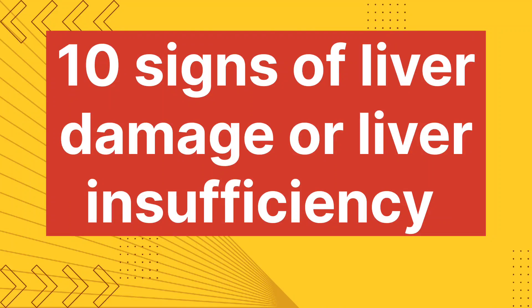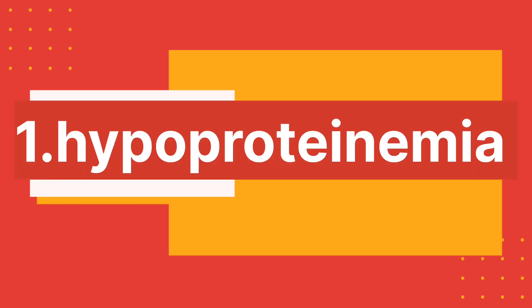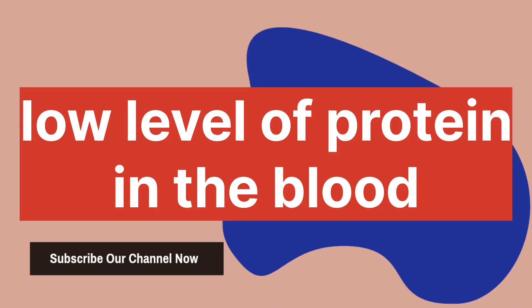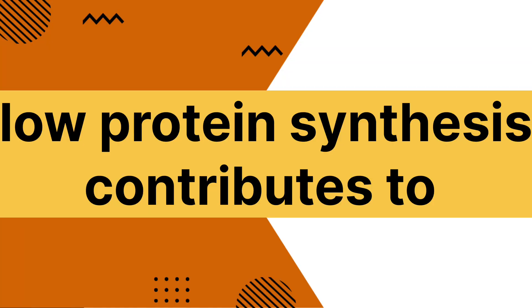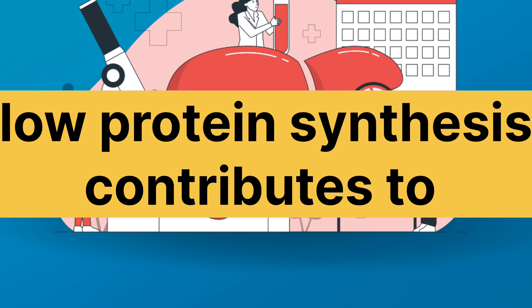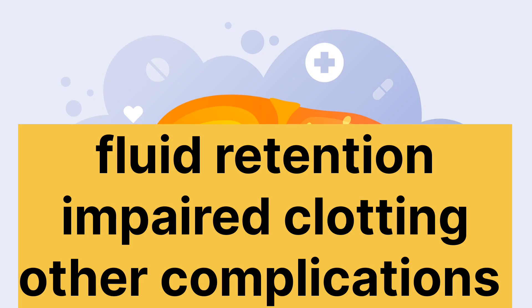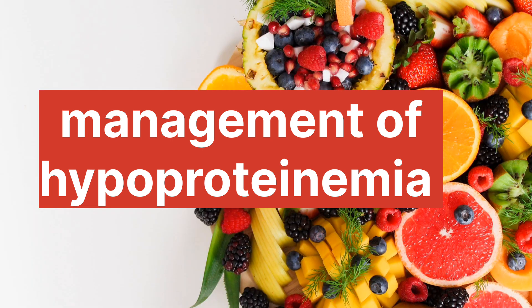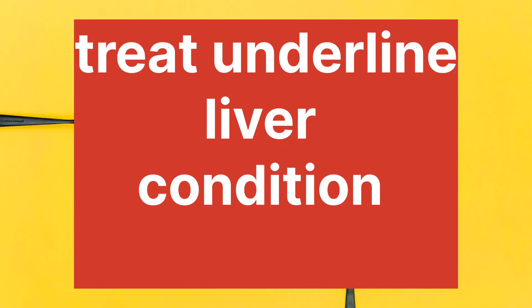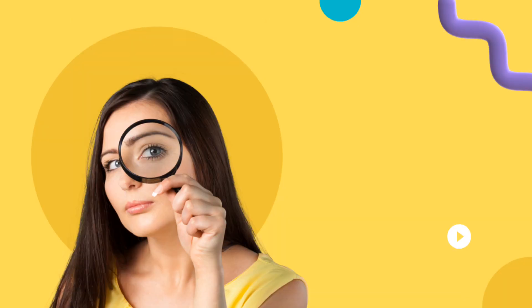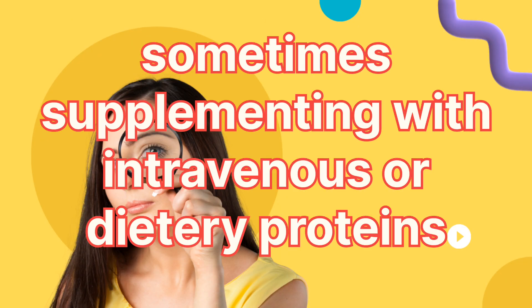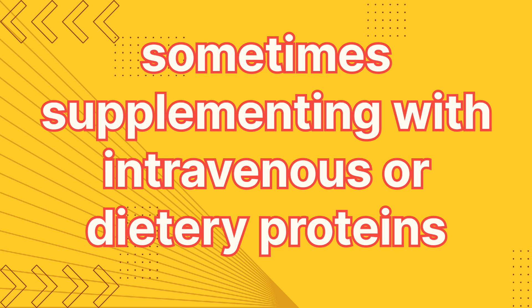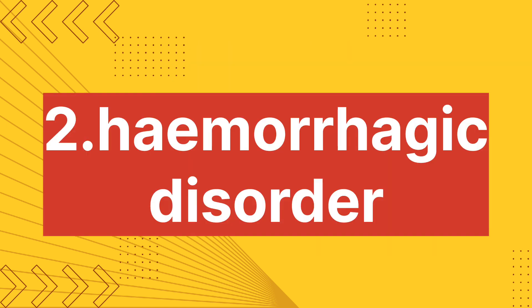In this video we will learn about 10 signs of liver damage or liver insufficiency. Number one: hypoproteinemia. It refers to abnormally low level of protein in the blood. When your liver does not function properly, its ability to synthesize protein may be compromised, resulting in lower protein levels in the blood. This can contribute to fluid retention, impaired clotting, and other complications. Management often involves treatment of the underlying liver condition and sometimes supplementing with intravenous or dietary protein.